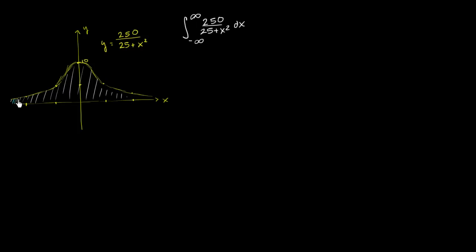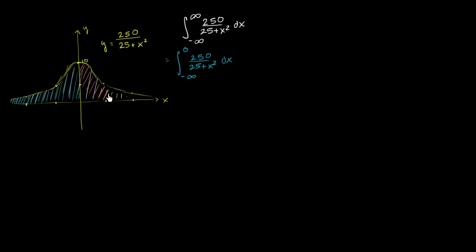One improper integral describes the area in blue from negative infinity to 0. So we'll say this equals the improper integral from negative infinity to 0 of 250 over 25 plus x squared dx, plus the improper integral from 0 to positive infinity of 250 over 25 plus x squared dx.